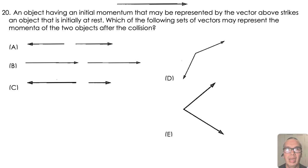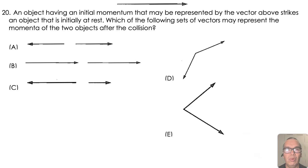Assuming a closed, isolated system, the total momentum should be positive in the x direction and zero in the y direction after the collision, because it must be the same as before the collision.